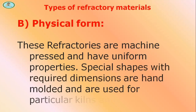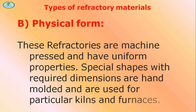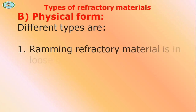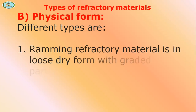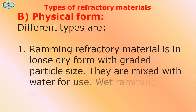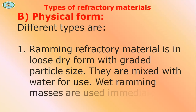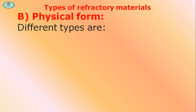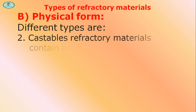Different types of monolithic refractories include: ramming refractory — the material is in loose dry form with graded particle size. They are mixed with water for use; wet ramming masses are used immediately on opening.